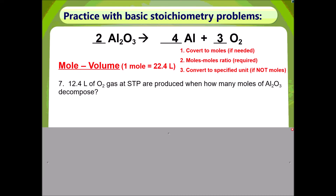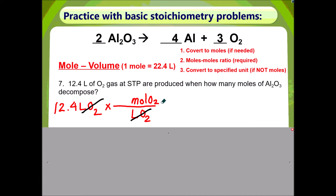Here's a mole-to-volume problem. 12.4 liters of oxygen gas at STP are produced when how many moles of aluminum oxide decompose? We start with the given: 12.4 liters of oxygen. We don't have moles, therefore we need to get rid of liters of oxygen and get to moles. The numbers come from the conversion factor where 1 mole equals 22.4 liters.